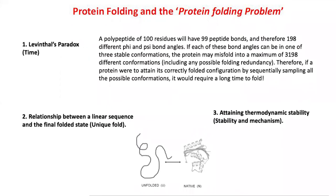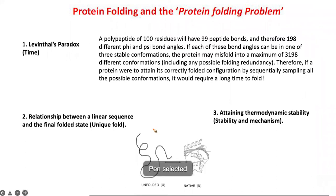For many years, people have talked about what is called the protein folding problem, which has many aspects. You have an unfolded state that goes to the folded state through certain intermediates — this is a kinetic process — and it ends up with a folded state. At equilibrium, as an approximation, you have one unfolded molecule and 10⁷ folded molecules. When the protein is made at the ribosome, it is in an unfolded state and has to go to these folded states.